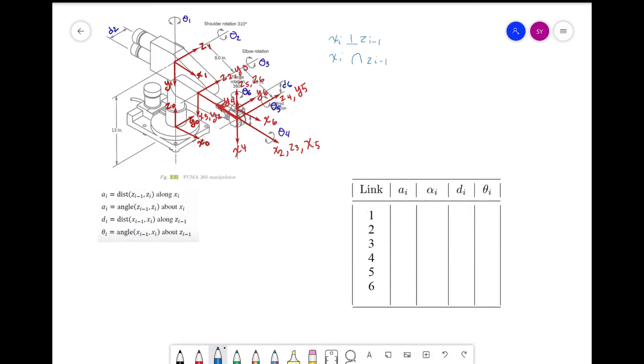Let's go over quickly the four DH parameters that we need to find. First we have a_i, which is the distance from z of i minus 1 to z_i along x_i. And we have alpha, which is the rotation between z of i minus 1 and z_i about x_i.